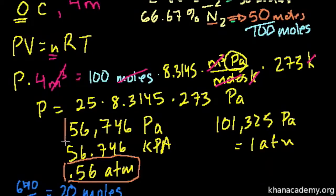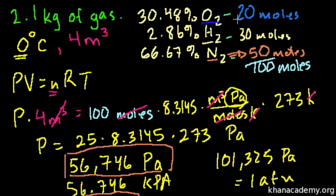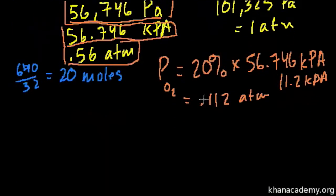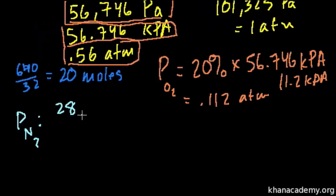So now what's the partial pressure of, say, nitrogen? Even though 66⅔% of the mass is nitrogen, only 50% of the actual particles are nitrogen. So 50% of the pressure is due to the nitrogen particles — we have to convert everything to moles, because we only care about the number of particles. The partial pressure due to nitrogen molecules is 50% of 56,746 pascals, which is approximately 28,373 pascals.